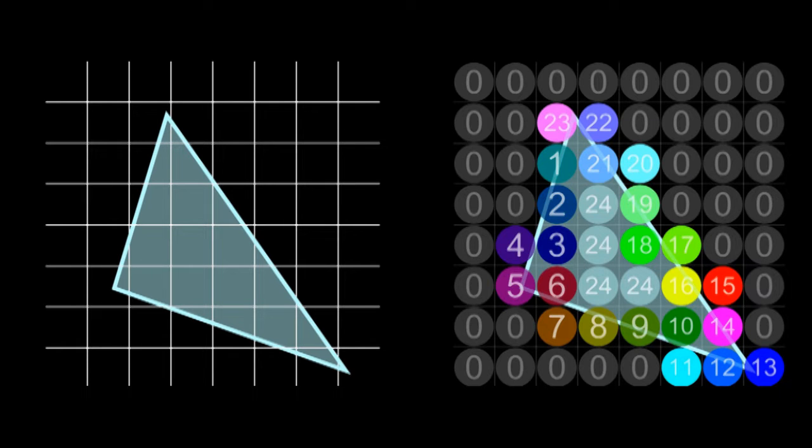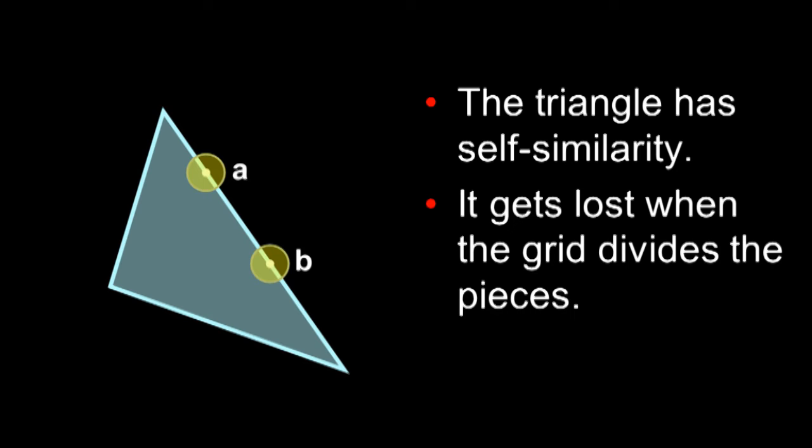What if you give it a shape that doesn't fit on a grid, like this triangle? If you try to split this triangle into tiles, every tile is going to be different. If you run the algorithm, it's just going to return the same shape you gave it. It's never going to come up with something new. The triangle actually is made up of self-similar parts, but this gets lost when we try to use this grid.